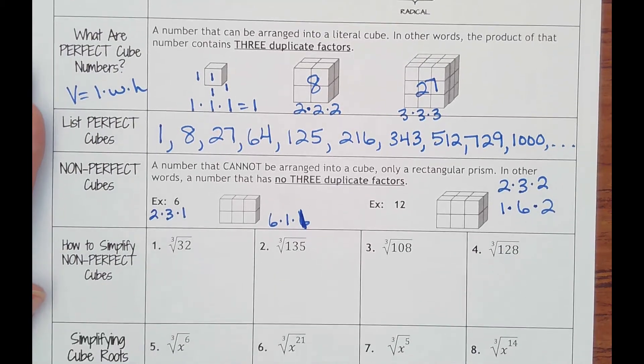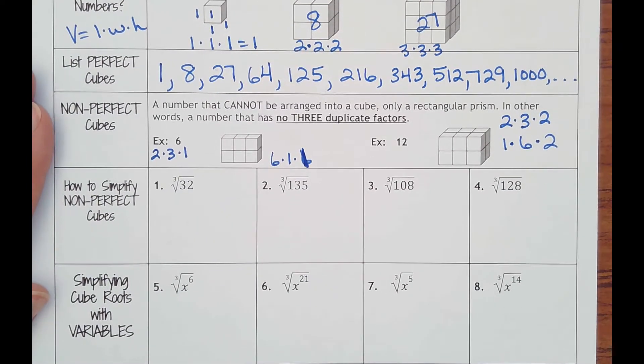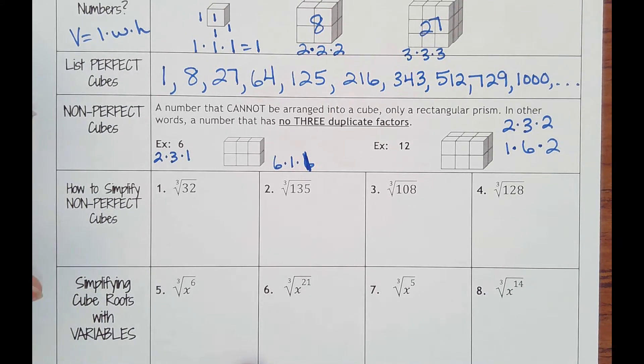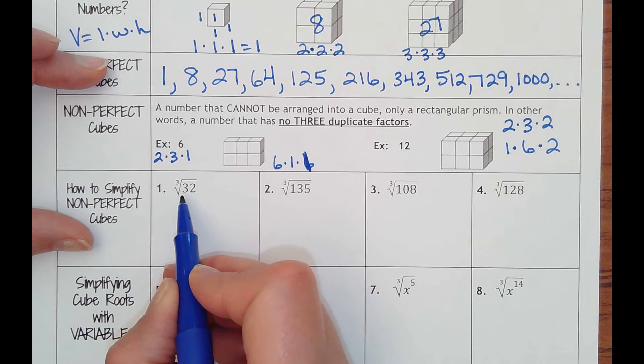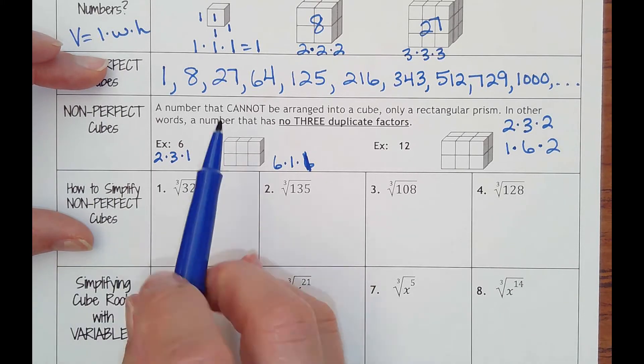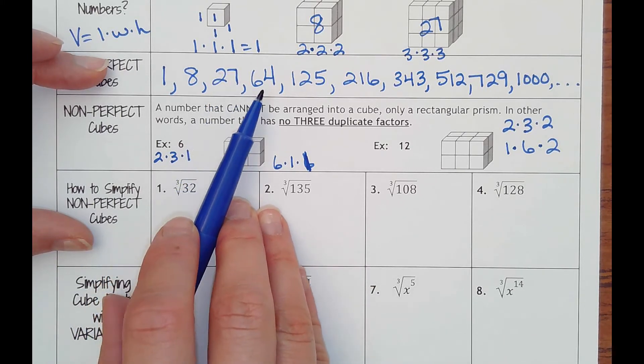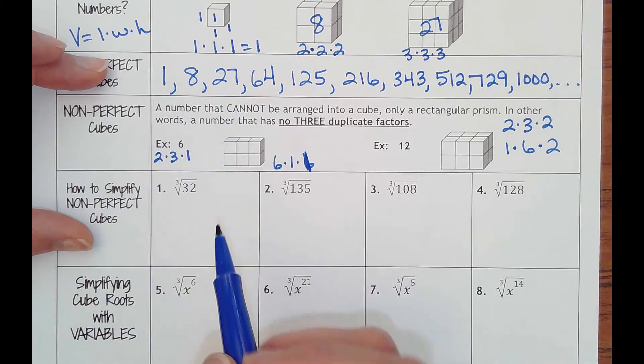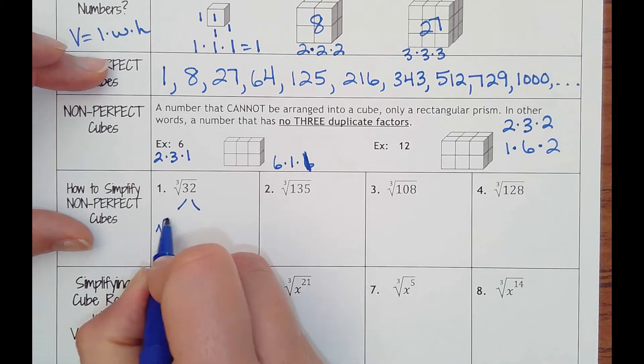So our job is to break these down using numbers from our list of perfect cubes up here. Cube root of 32. Start here. Can't be 64, can't be bigger than itself. 27, no. Eight, yes.